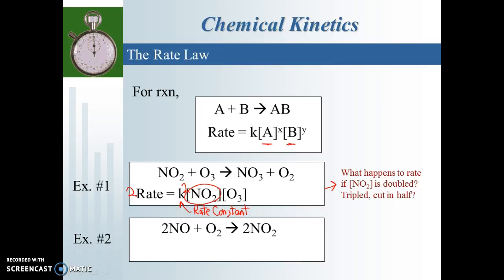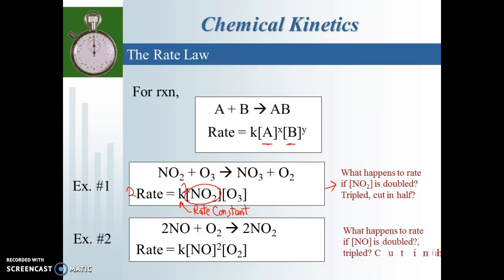Here's another example of a reaction. The rate law is rate equals k times the concentration of NO squared times the concentration of O2. In this case, what would happen if I doubled my concentration of NO? This is a different situation because NO is squared. So if I double my NO, since it is being squared, it actually has an impact of increasing the rate by four times.